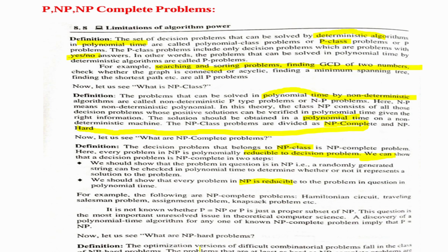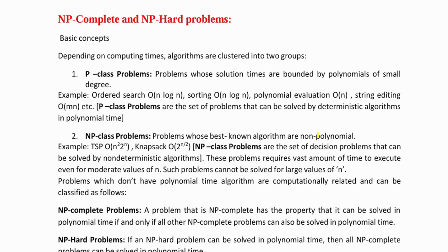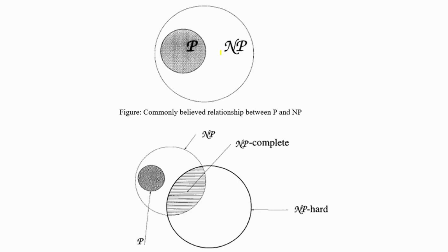We will see what NP hard problems are. The optimization versions of difficult combinatorial problems fall under this class. Problems that are at least as hard as NP complete problems are called NP hard problems. If an NP hard problem can be solved in polynomial time, then all NP problems can be solved in polynomial time. P is a subset of NP, and at the intersection of NP and NP hard we have NP complete, while on the outer side we have NP hard problems.